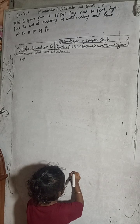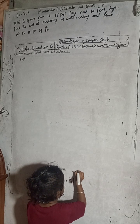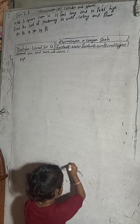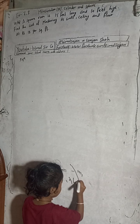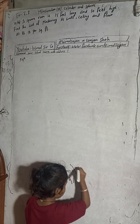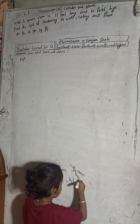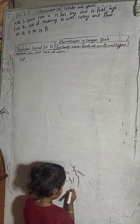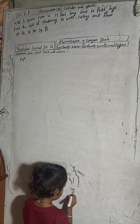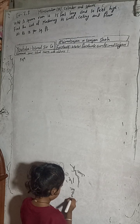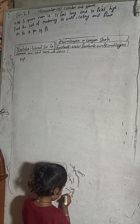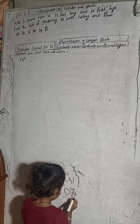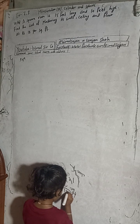Hi class 9 and 10 students, welcome back to Vimal Sarji YouTube channel. This is question number 4B, exercise 7.3, mensuration third part, cylinder and sphere, class 9 compulsory maths.